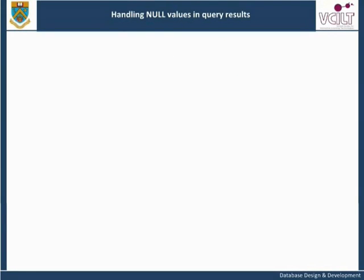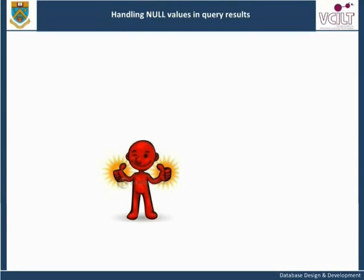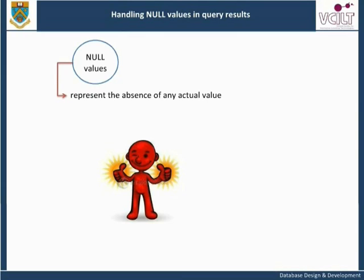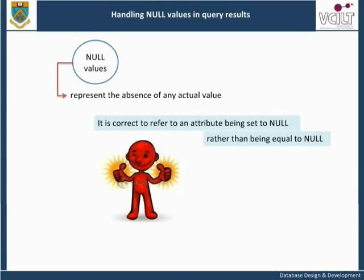In the unit introducing the relational model, we discussed the fact that null values represent the absence of any actual value, and that it is correct to refer to an attribute being set to null, rather than being equal to null. The syntax of testing for null values in a WHERE clause reflects this. Rather than coding WHERE x equals null, we write WHERE x IS NULL or WHERE x IS NOT NULL.